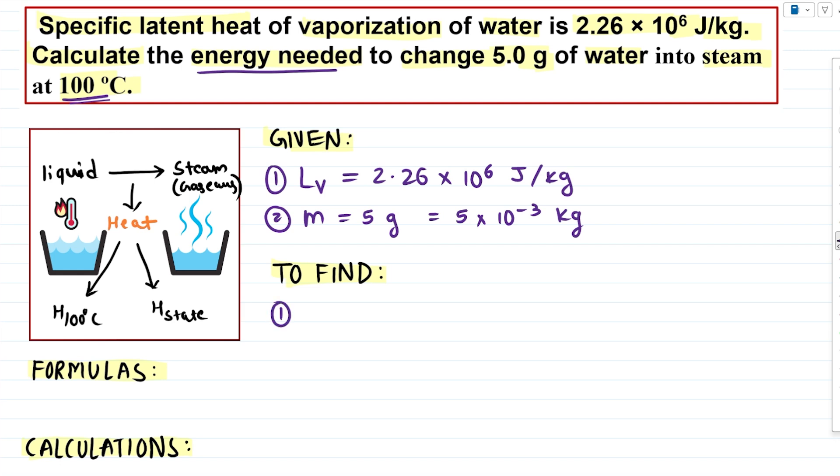In our to find section, we are required to calculate the heat energy needed for state change of water. And how is this state change? That is from liquid to vapor. So liquid to gas or liquid to vapor, doesn't matter.